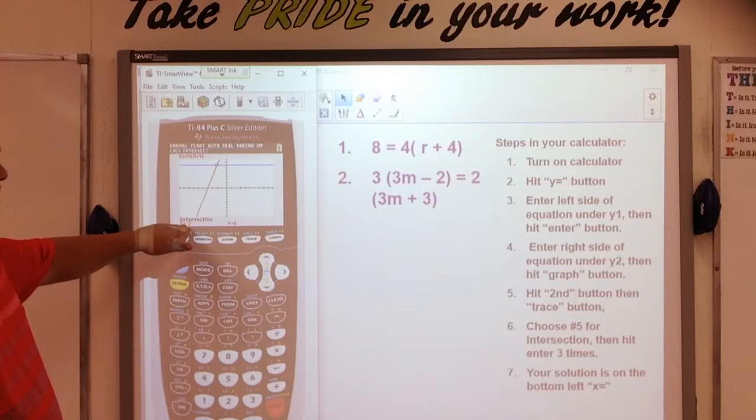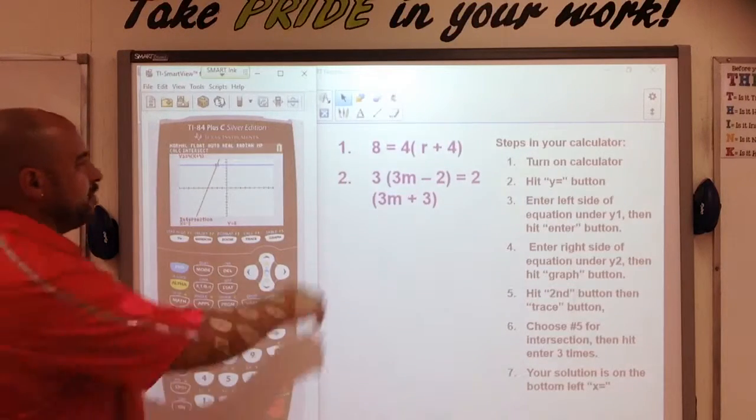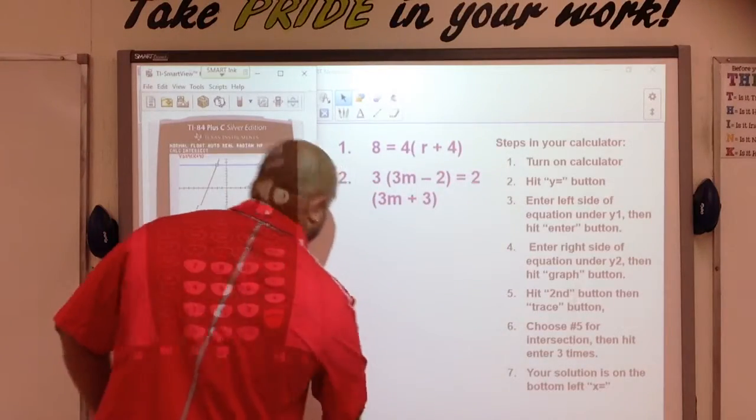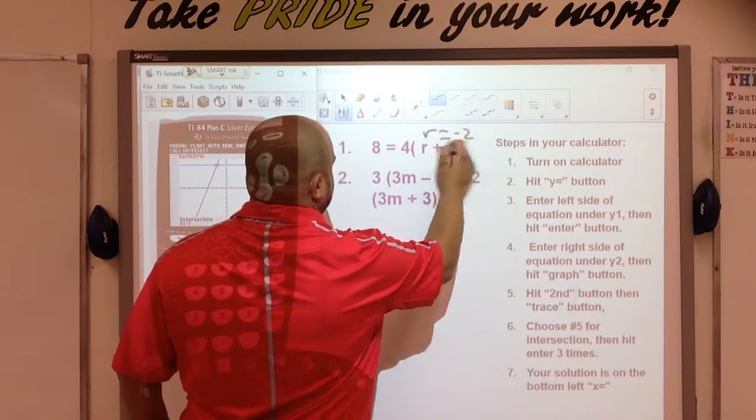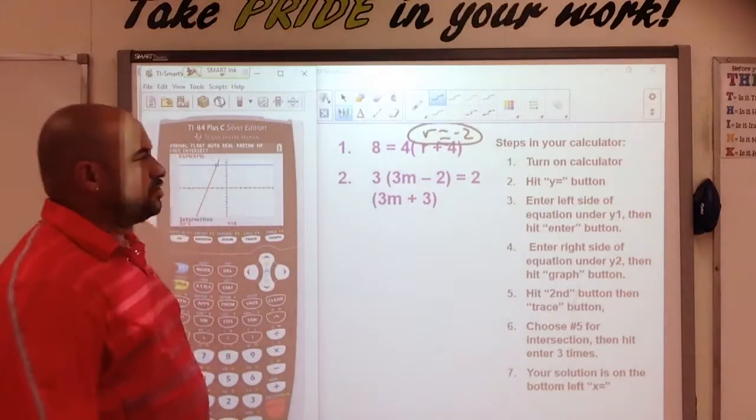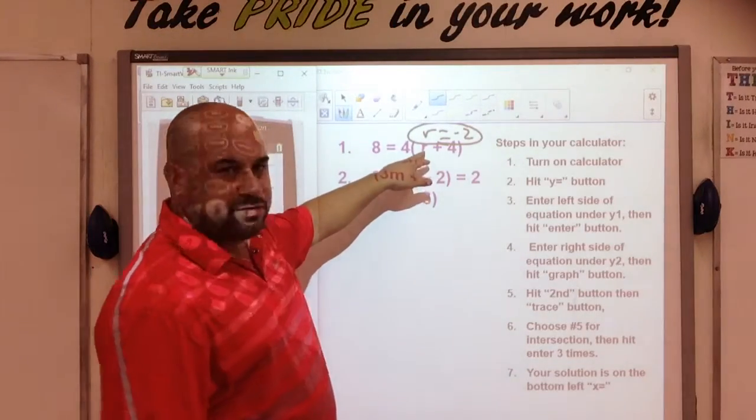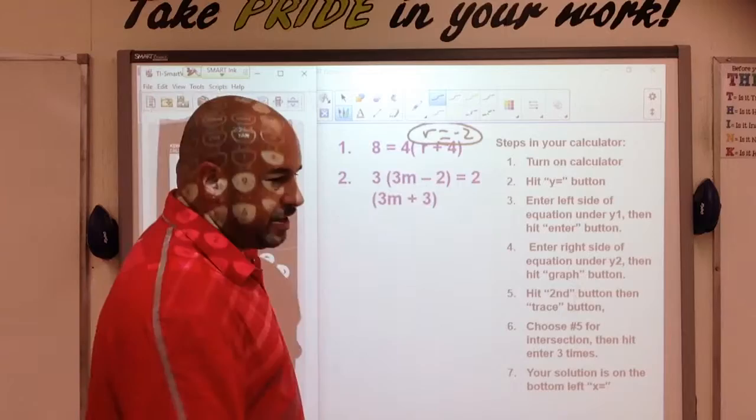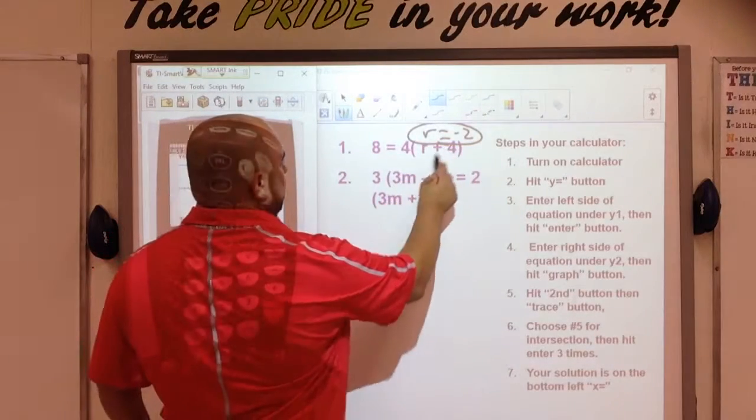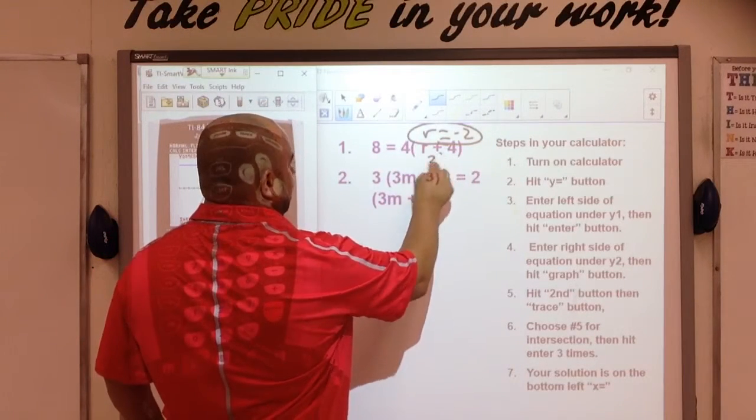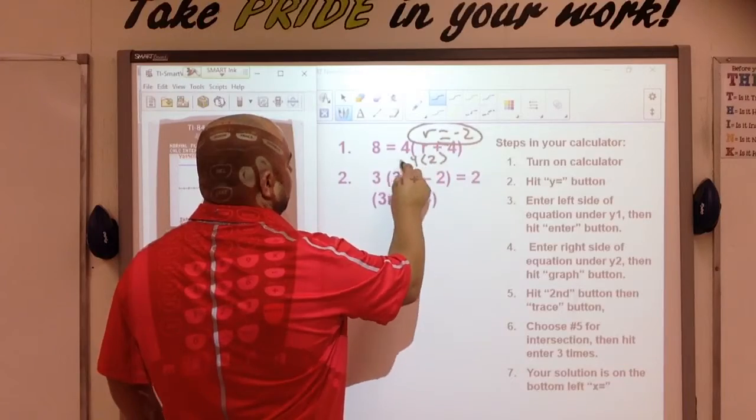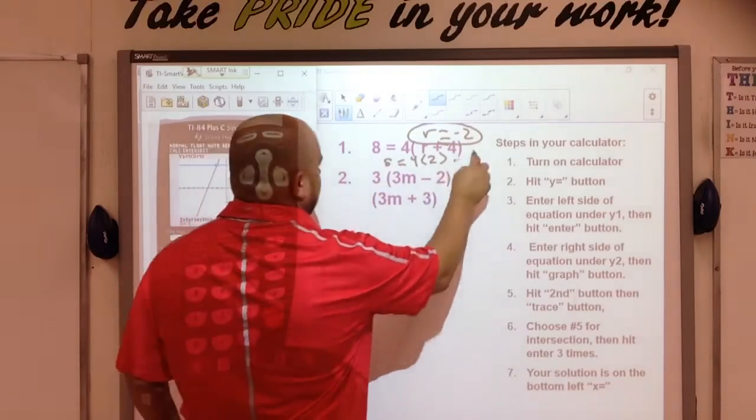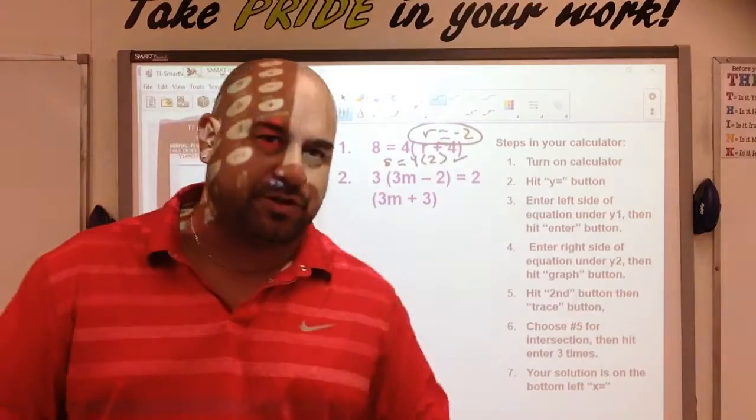So, in this case, our answer is x equals negative 2. But in here, it would be r equals negative 2. And that is our solution. Now, you can plug in negative 2 here if you want and check it. Negative 2 plus 4 is 2. And 2 times 4 is 8. So, that does work. Let's try number 2.